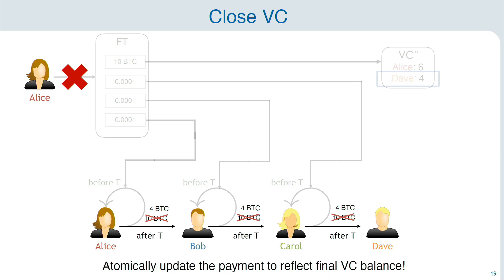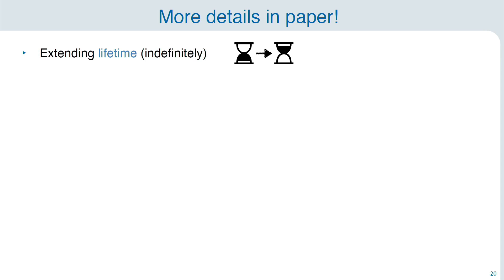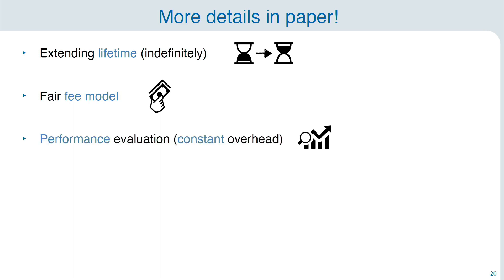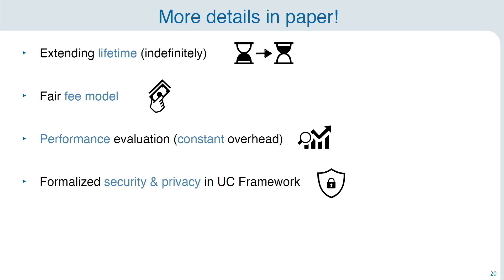The main challenge — shown in the paper with a new operation — is how to atomically update this payment from one value to another. I encourage you to check out the paper for more info, also for how we extend the lifetime to potentially indefinitely, how we implement the fair fee model that allows intermediaries to charge exactly for the amount of money and time they have to lock up, how we do the performance evaluation showing we can reduce on-chain overhead in the worst-case dispute from linear to a single transaction and off-chain storage from linear to constant per party. Finally, we formalize the protocol in the UC framework and analyze its security and privacy.